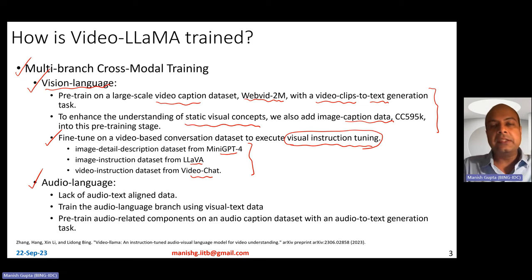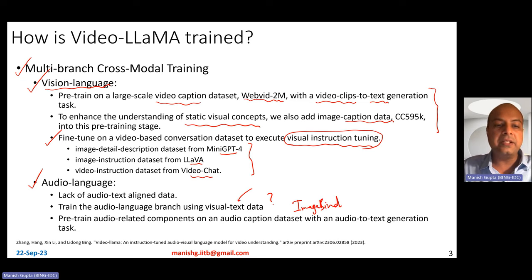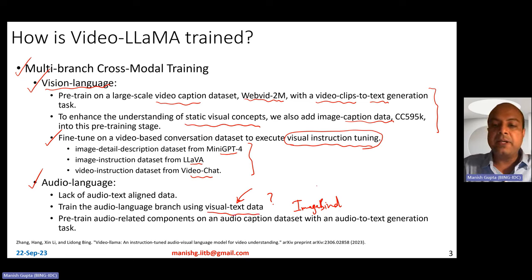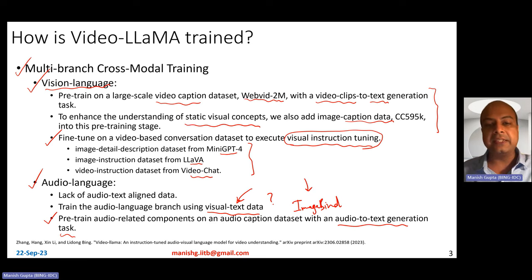For the audio-language branch, the problem is that there is a lack of audio-text aligned data. Therefore, they also train the audio-language branch using the visual-text data itself. This makes sense because their audio encoder is an ImageBind audio encoder — and ImageBind is a multimodal model serving six different modalities. Thanks to ImageBind's multimodality, it learns to process audio as well. They further pre-trained the audio-related components on an audio-caption dataset with an audio-to-text generation task, though the majority of pre-training is done using the same visual-text data.